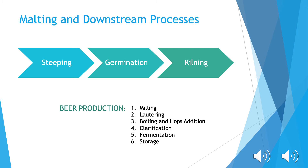Malting also causes the release of phenolic compounds and vitamin E compounds during germination. However, these levels are observed to decrease again during kilning.